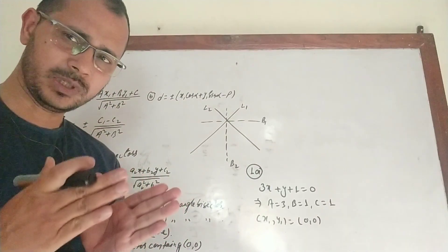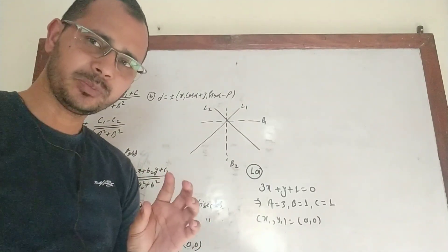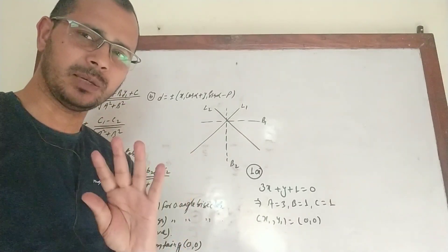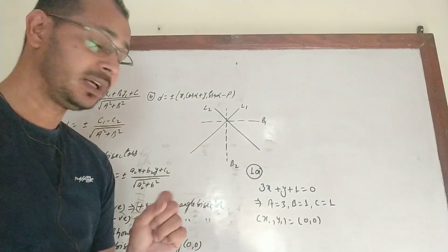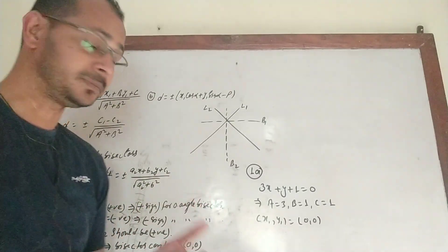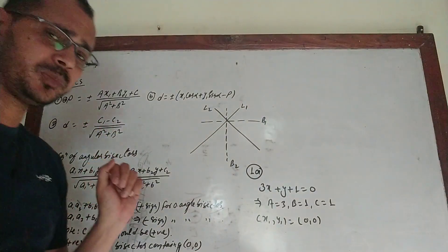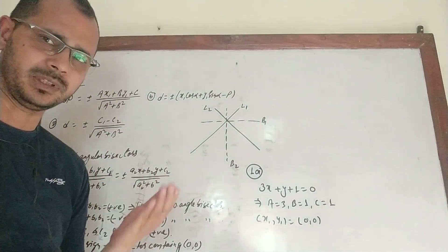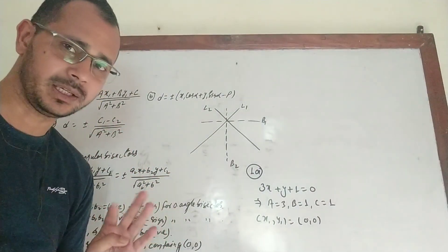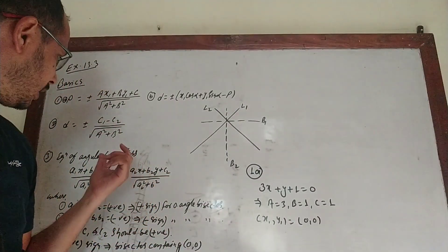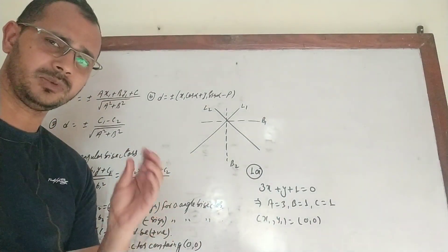Next, for parallel lines: if two lines are parallel, to find the distance between them, the x-coefficient and y-coefficient must be the same. If they differ, we make them equal by multiplication, because slopes must be the same. Then we can directly use the perpendicular distance between two parallel lines formula: |c1 − c2| divided by √(a² + b²).